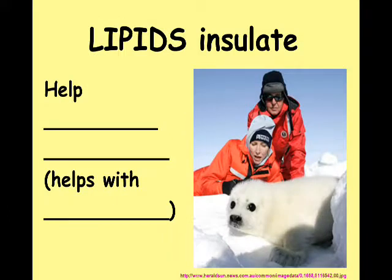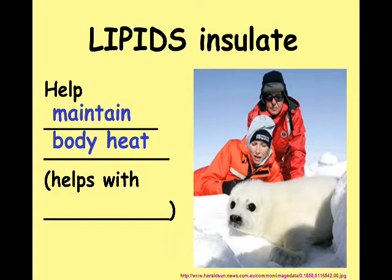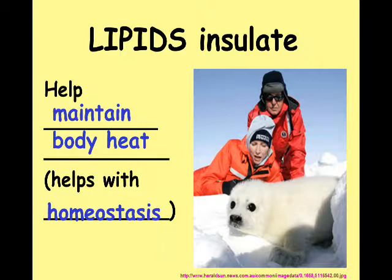Lipids are also really good at insulating body heat. They help maintain your temperature, which connects to that vocab word from our very first chapter — homeostasis, keeping the balance in your body. We don't like it too hot, too cold, too much sugar, too little water, too acidic. Your body works to maintain stable internal conditions. Think about animals that live in very cold places and swim in cold water — walruses and whales store fat to help them stay warm. We call it blubber. Those fat stores are not only used for energy, but having that blubber helps to insulate against cold temperatures.